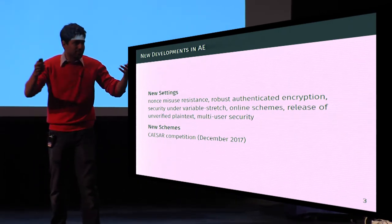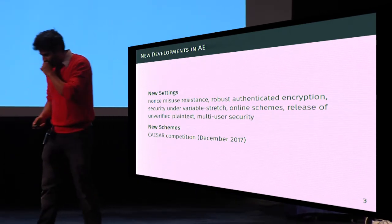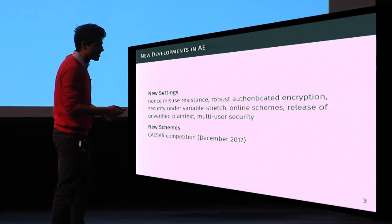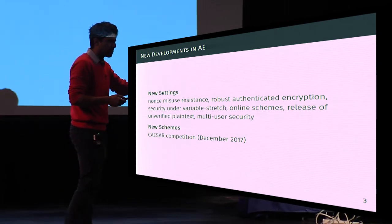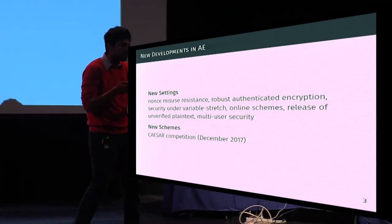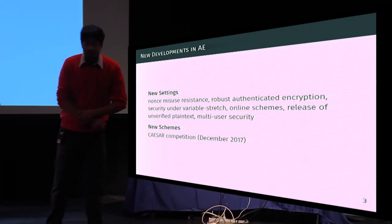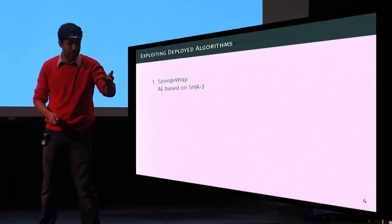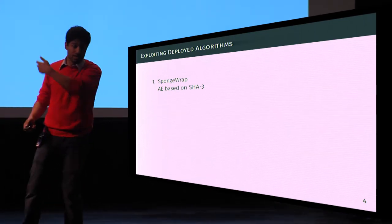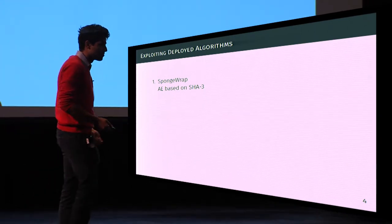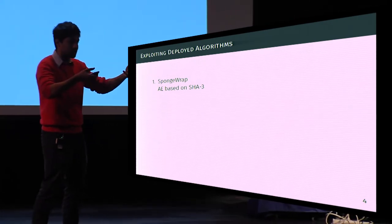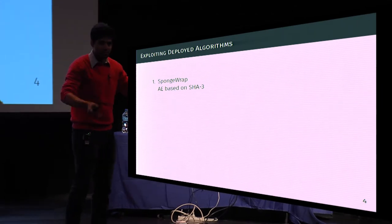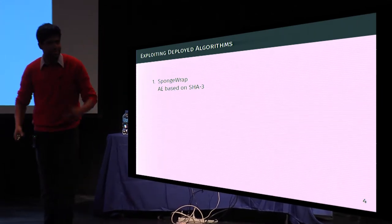So what's the point? There have been results that have actually made it faster to reach practice, or at least tried to. One approach is to exploit already-deployed algorithms as much as possible. For example, Sponge Wrap converts SHA-3 into an authenticated encryption algorithm, with the idea that if SHA-3 is already deployed, you can immediately get authenticated encryption.